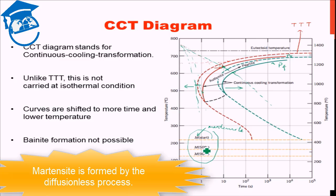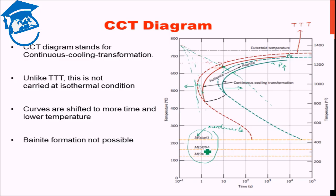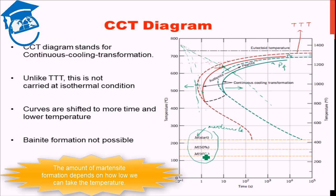And martensite formation is called an athermal process. It does not require time. Since it is diffusionless process, it occurs at the velocity of sound. It occurs instantaneously. What actually decides the amount of martensite that will be formed is how low we take the temperature. That will decide how much percentage of martensite we'll have in a material.